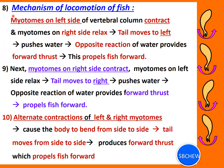To summarize the mechanism of locomotion: first, myotomes on the left side of the vertebral column contract while myotomes on the right relax, causing the tail to move to the left. The tail then pushes on the water, causing an opposite reaction of the water, which provides the forward thrust that propels the fish forward.